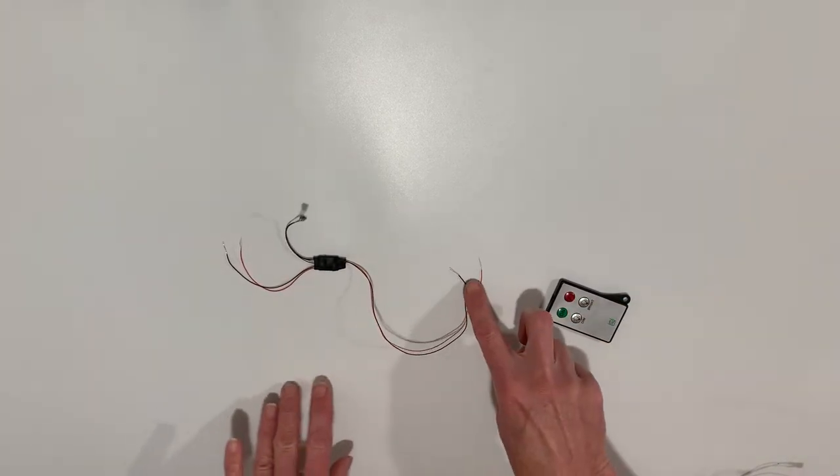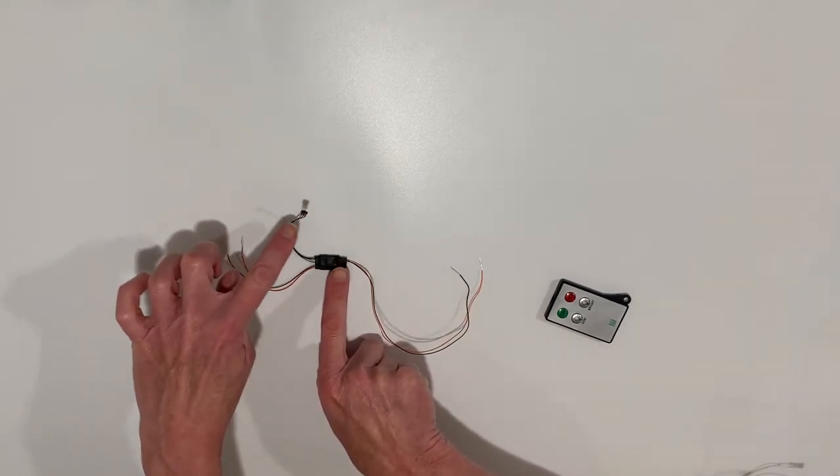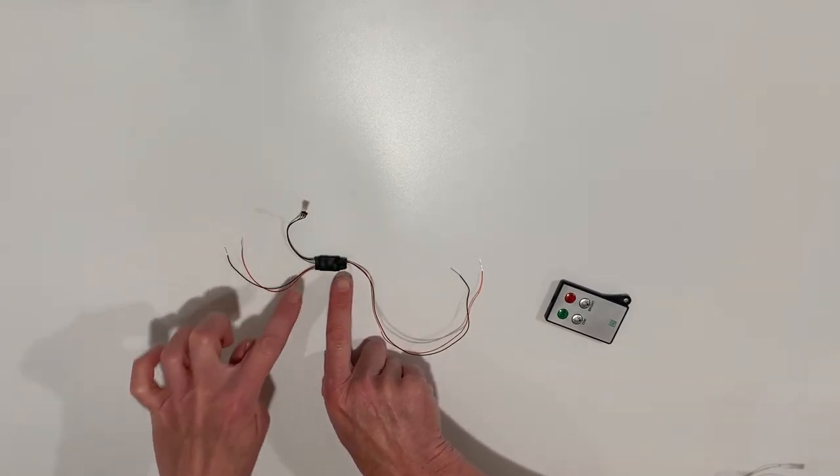You can cut either set of wires to whatever length you want. Just keep track - the side with the receiver is also the side that goes to the lights.